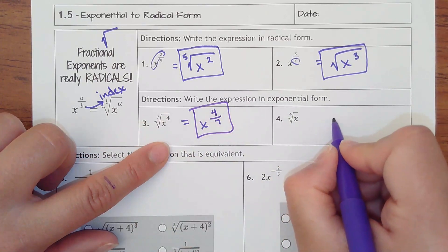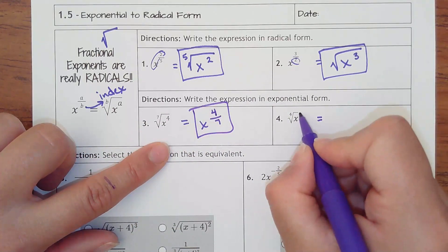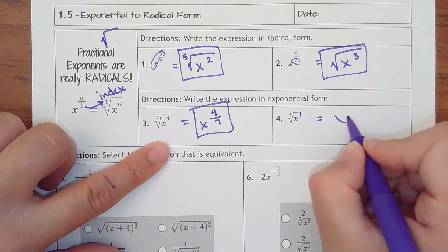And number four, x doesn't look like it has a power, but we know that's automatically a one. So this would be x to the one-fourth power.